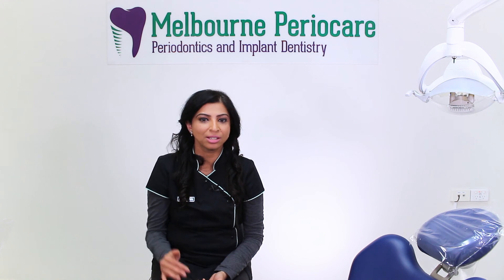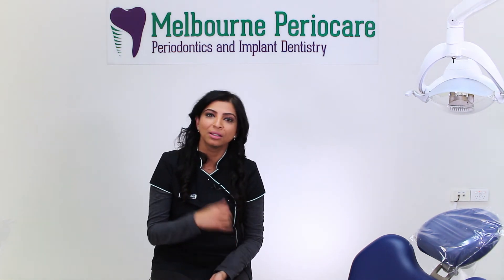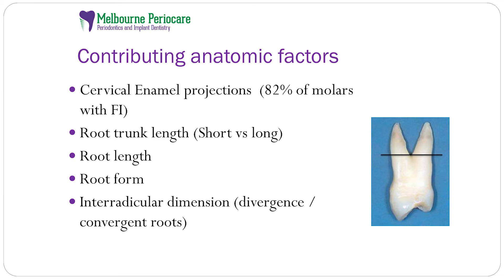Having talked about the causative factors, let's talk about contributing anatomic factors. Cervical enamel projections are seen in about 82% of molars with furcation involvement. There is also short or long root trunk length, root length and root form, which have a lot of bearing on furcation involvement. Then there is furcation anatomy itself — the width of furcation entrance, root concavities in the furcation area, and bifurcation ridges which act as sites of plaque accumulation.